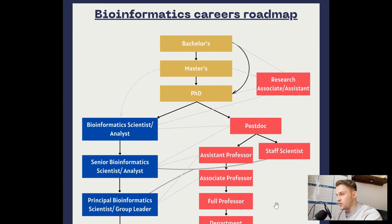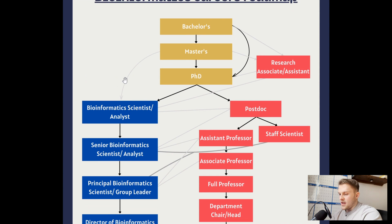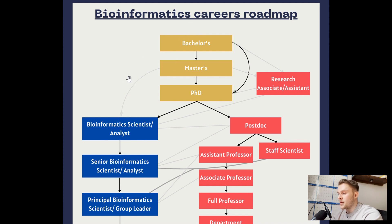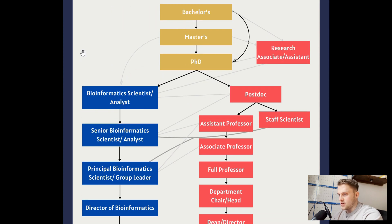Now let's look at the industry route. There are many different job titles — bioinformatics scientist, bioinformatics analyst, and quite a few others — but for simplicity, this represents any junior role in industry. A lot of people join industry after their PhD, some after their master's, and some even after their bachelor's, though that's more rare. At this level you're in the most junior or mid-level position, doing what a bioinformatics scientist does in that particular scenario.